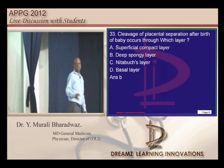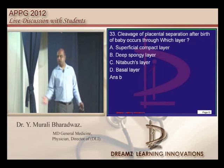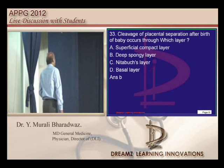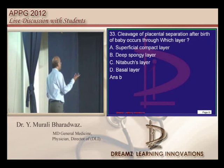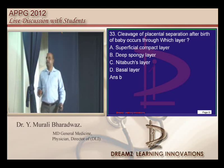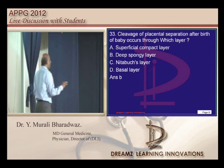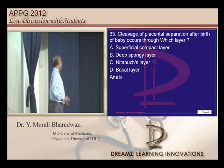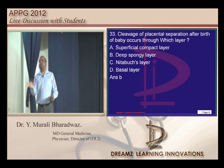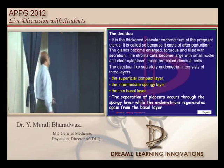This requires some creativity regarding the placenta. First, we need to know how many layers there are. We have the superficial compact, intermediate spongy, and thin basal layer. It is the intermediate spongy layer of the endometrium through which separation of the placenta basically occurs, and the basal layer will undergo regeneration in the puerperal period.